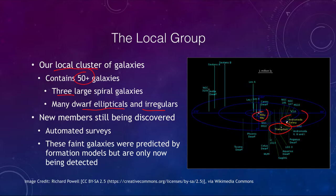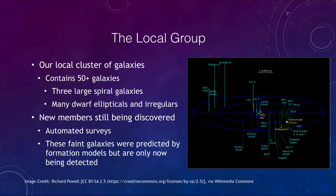Even though these are the closest galaxies to us, we are still discovering new members. New faint galaxies are being found by automated surveys that look for concentrations of stars and are able to find very faint galaxies that had been predicted but we're only now able to detect. This is a small cluster with only 50 galaxies — we can have much larger clusters.